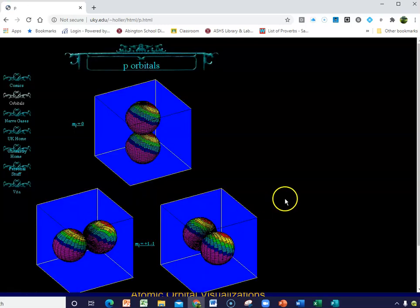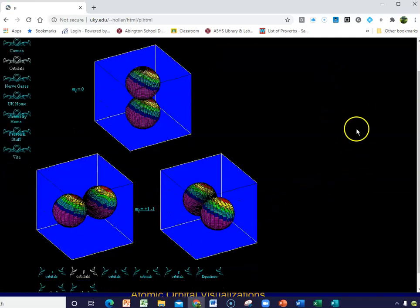I'm going to show you the P. The P sublevel has three, and these are on the X, Y, and Z axes. And again, the regions that you see here, it's roughly a dumbbell shape. This is what a P orbital would look like.